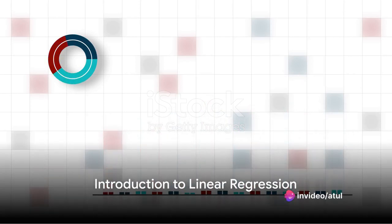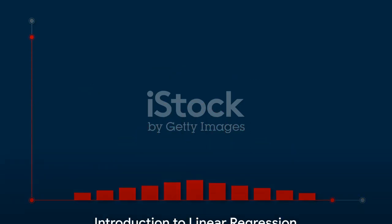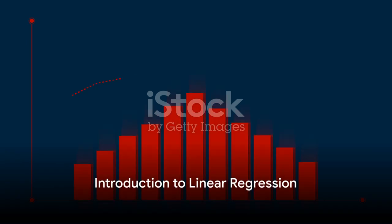Ever wondered how Netflix knows what movie to recommend next, or how Google predicts what you're going to type before you've even finished typing it? The secret lies in a concept known as linear regression.